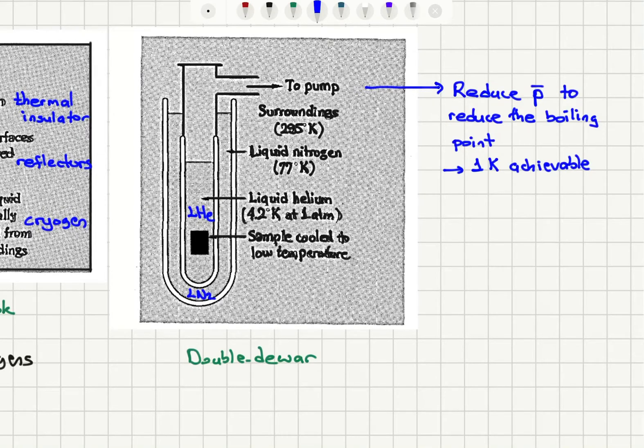So by pumping on liquid helium we can go down to 1 Kelvin without any trouble. This is just an effect of reducing the vapor pressure. As the pressure is reduced the temperature is reduced. The boiling point goes down to 1 Kelvin.